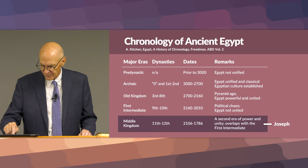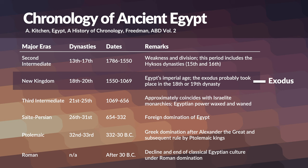The second intermediate era, 1700 to 1550 BC, was a period of weakness and division that includes the Hyksos dynasties. Then we have the new kingdom, the eighteenth to twentieth dynasty from 1550 to 1069 BC. This is Egypt's imperial age, and the Exodus probably took place in the eighteenth or nineteenth dynasty. Continuing through the third intermediate, the Saite-Persian era, the Ptolemaic period, and then the Roman period after 30 BC — there was a decline and the end of classical Egyptian culture under Roman domination.